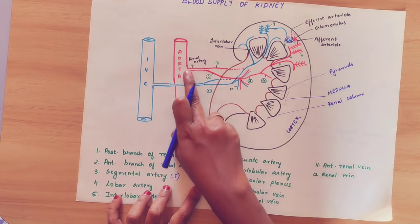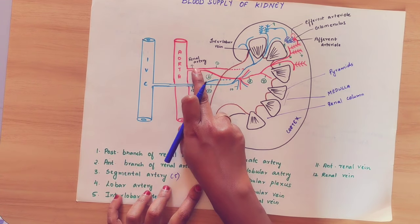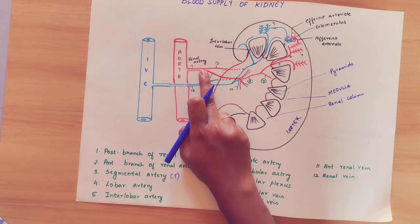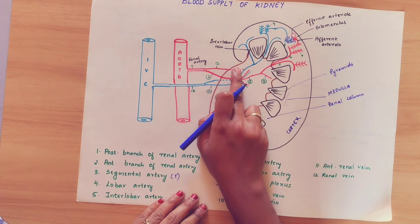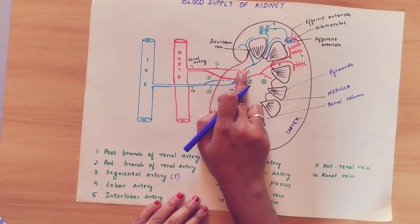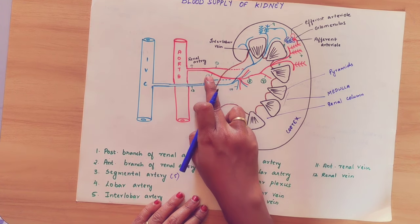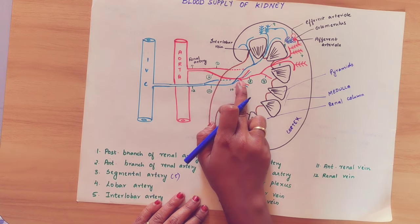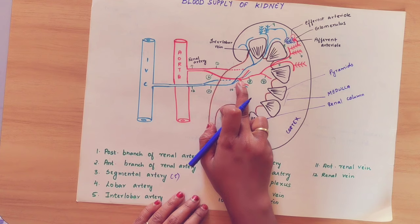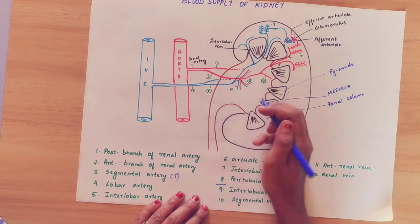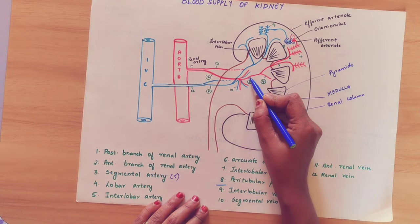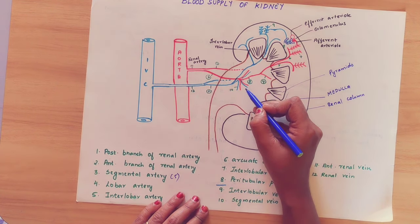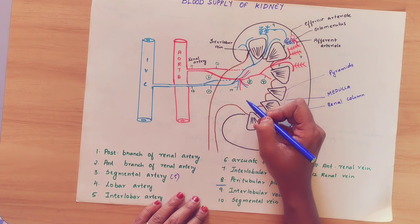The kidney receives blood via the renal artery, which divides into two: the posterior branch of the renal artery and the anterior branch. The anterior branch gives rise to 4 segmental arteries.